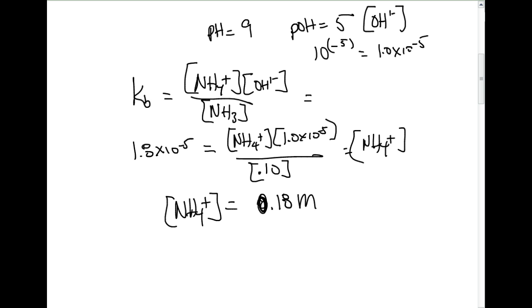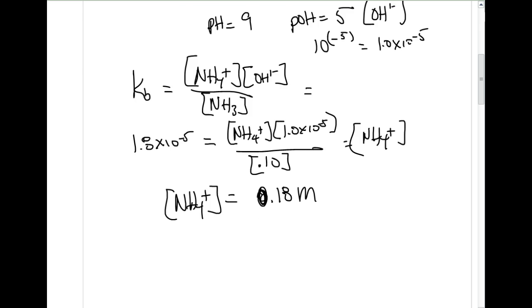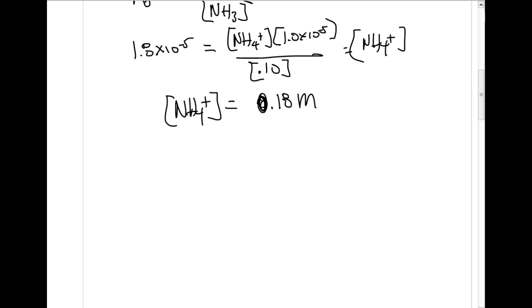The problem originally asked how many moles of ammonium chloride. So what I just solved for was molarity. We're going to use the molarity formula: molarity equals moles per liter. What was given to us was a 2-liter solution, and we just calculated 0.18 molar. When we solve that for moles, we get 0.36 moles of NH4+. We could easily convert that to grams if we needed to.